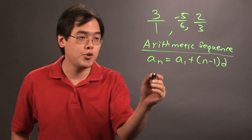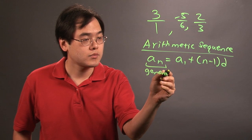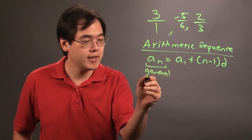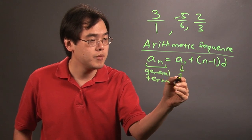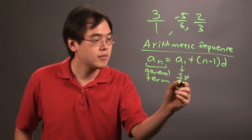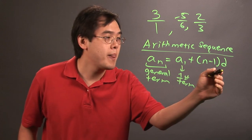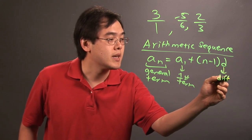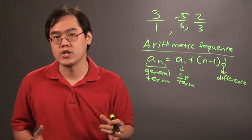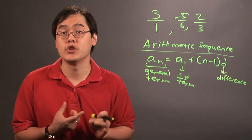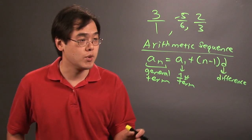Now, just to refresh your memory, a_n refers to the general term or we can say nth term. a_1 is the first term. n is whatever term that you're looking for, and d is the arithmetic difference. In other words, what number needs to be added or subtracted between each term to get to what you're looking for. What is the pattern in the arithmetic sequence?